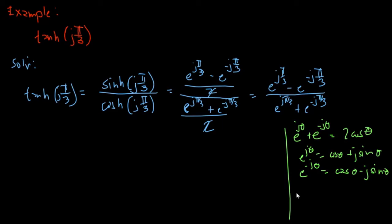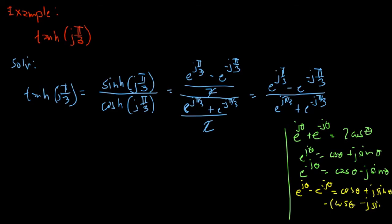So we just substitute that. e^(jθ) minus e^(-jθ) becomes cosine(θ) plus j·sine(θ) minus cosine(θ) minus j·sine(θ). The cosine terms cancel out, leaving us with 2j·sine(θ).